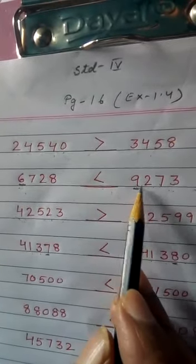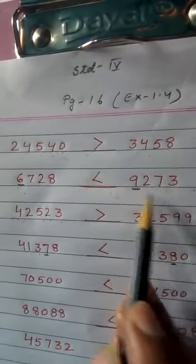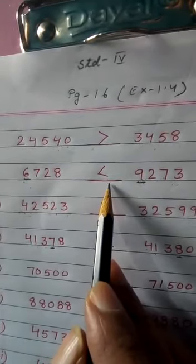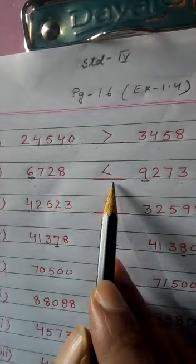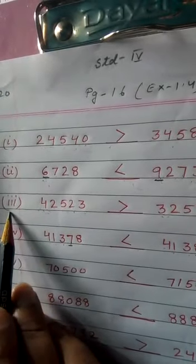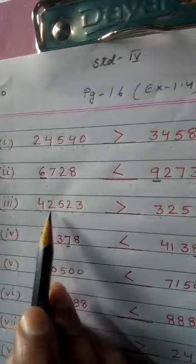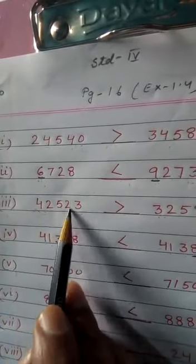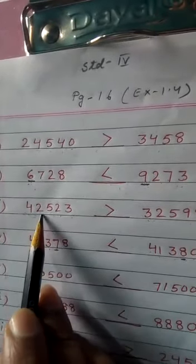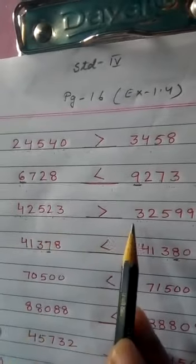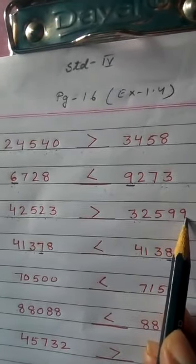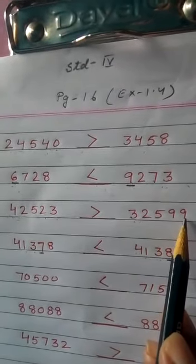So 9273 is greater — this number is greater. Now next number, 1.3: 42523 and here we are having 32599.